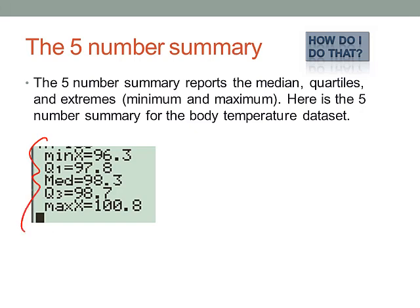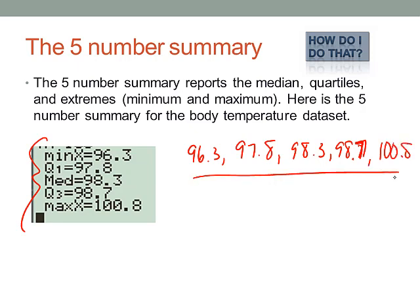When you're reporting this, we just write it in order. So we'll put 96.3, comma, 97.8, comma, 98.3, comma, 98.7, comma, 100.8. That is your five-number summary.